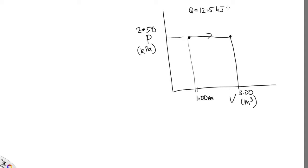A good technique to use when answering these questions is to write what you know of Q, W, and the change in internal energy above the path on the PV plot.